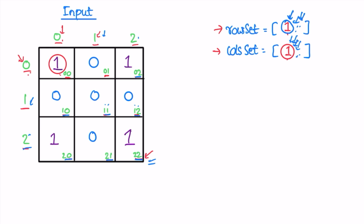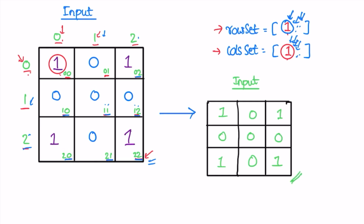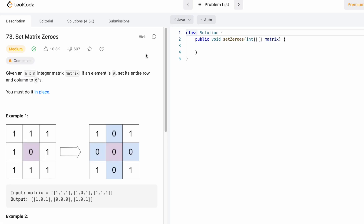Element (2,2) — two is not present in either set, so we don't change it. We reach the end of the matrix and the result matches the expected output. This is the final answer. Now that we've seen the example walkthrough, let's code it up.